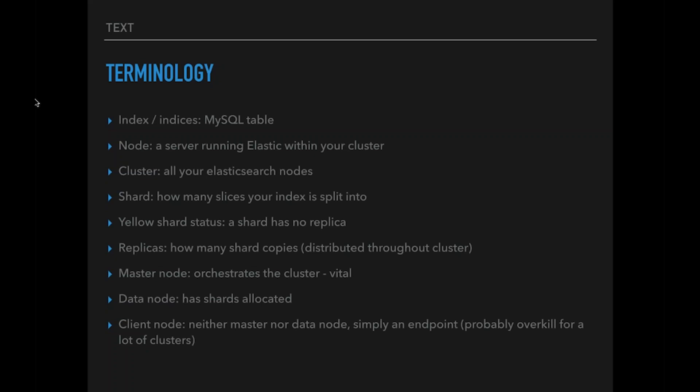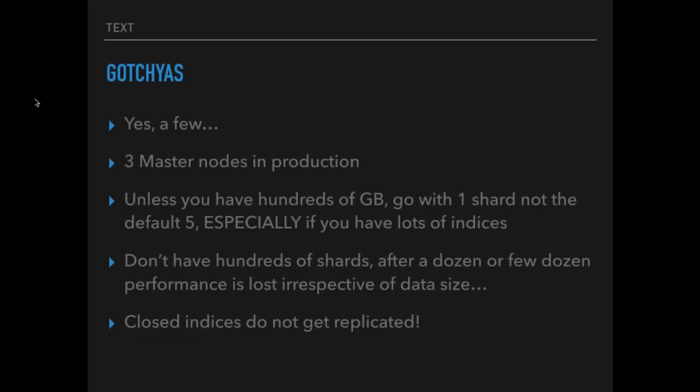There are a few gotchas. You certainly want three master nodes in production to avoid split brain. If you have a normal amount of data — unless you have hundreds of gigabytes — go with one shard, not the default five. I think the default five is just to showcase how fast and powerful it can be. If you have lots of shards, you want a dozen or so, because if you have too many more, you see a big drop off in performance irrespective of data size. And if you close indices to save space or improve performance, bear in mind that they do not get replicated, which is quite painful if you don't know that.